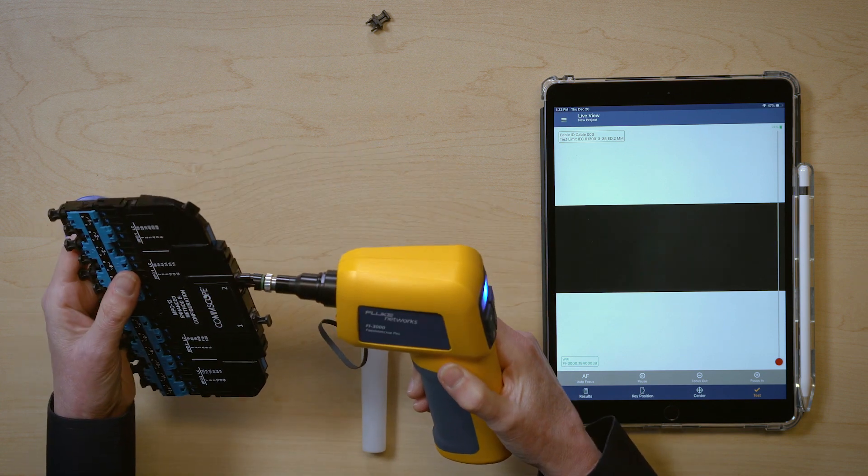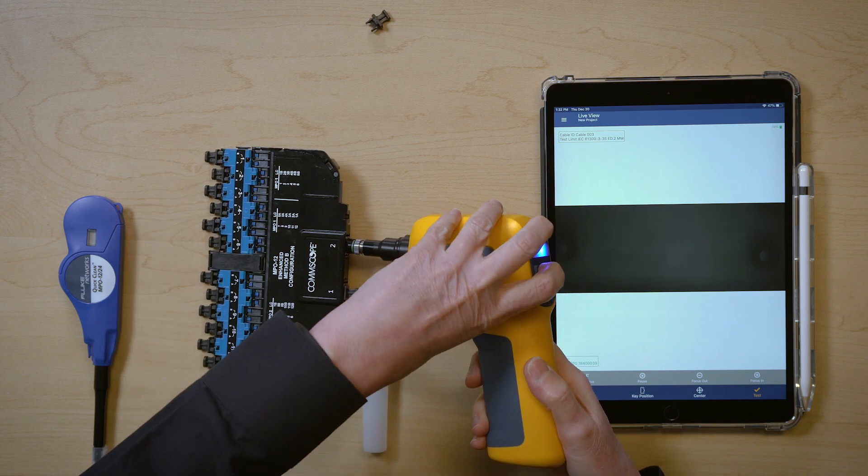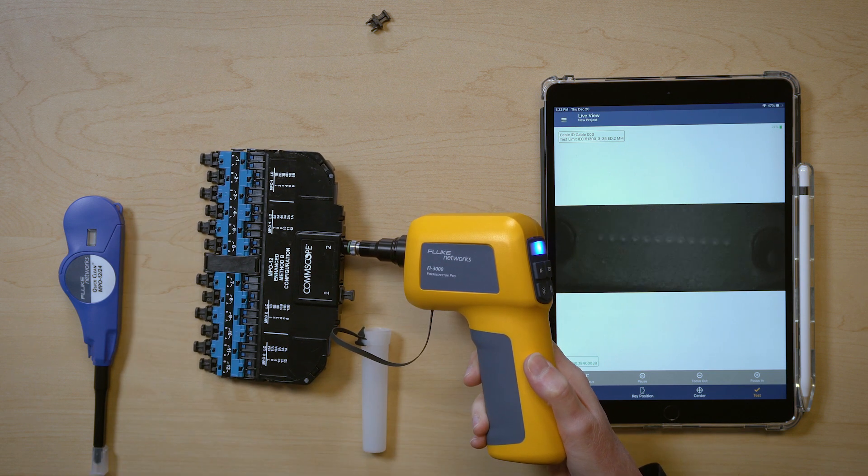Let's go ahead and insert it in, and there I go. I have a live image, but again I need to autofocus it. So let's press autofocus, and there is the image.